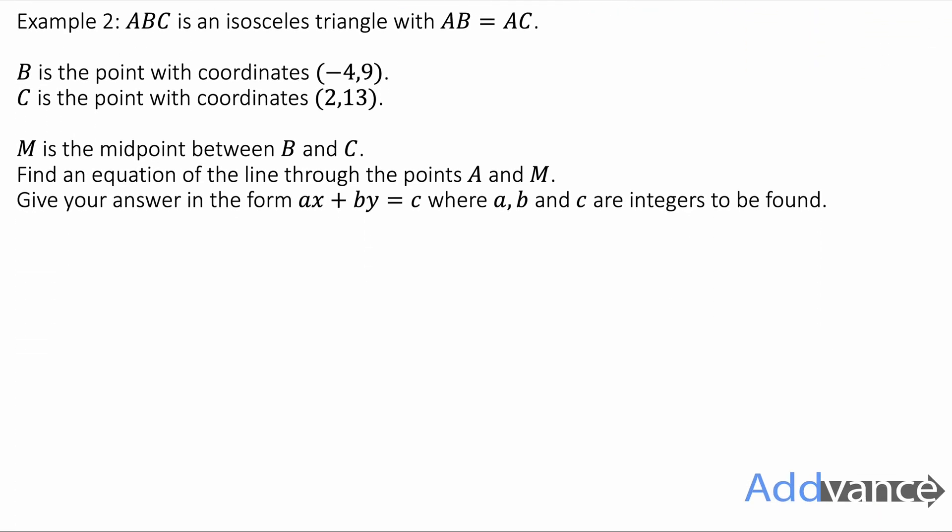ABC is an isosceles triangle with AB equal to AC. B is a point with coordinates (-4, 9) and C is a point with coordinates (2, 13). M is a midpoint between B and C. Find an equation of the line through points A and M and give that answer in the form ax + by = c where a, b and c are integers to be found. Integers means whole numbers.